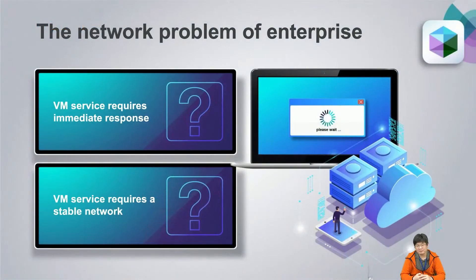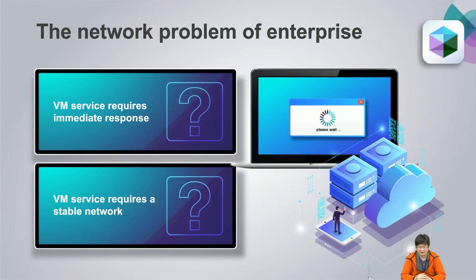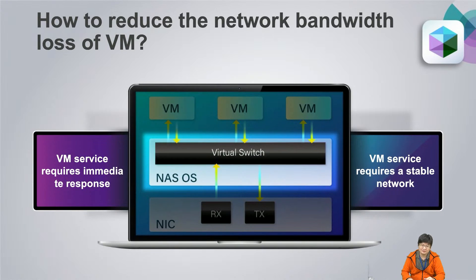Enterprise IT always has a network problem. The first is that VM service requires an immediate response. The second is that VM service may require stable network performance. So, how do you reduce the network bandwidth loss of VMs?